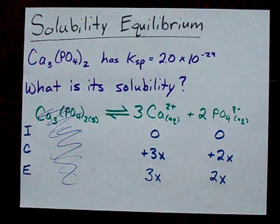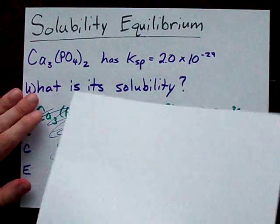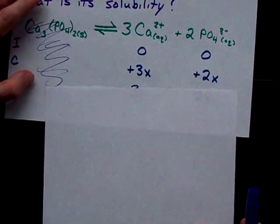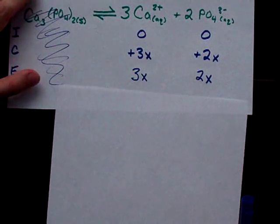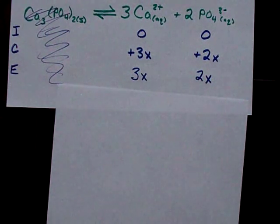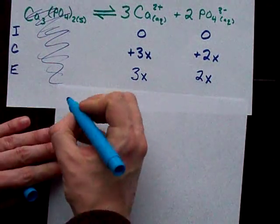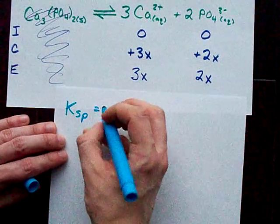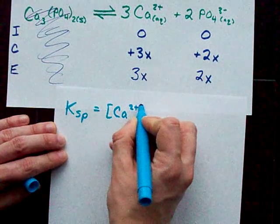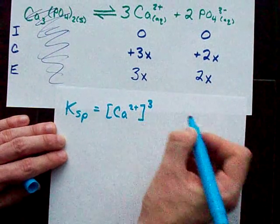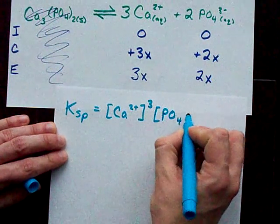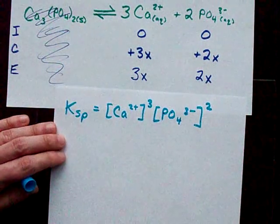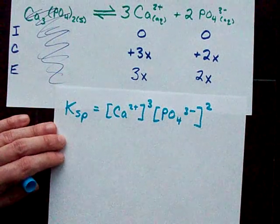Why does this matter? Because we were given K, the equilibrium constant of 2 times 10 to the minus 29, we can use these concentrations in a Ksp expression and solve for x. Ksp, as you create an equilibrium expression, is products over reactants. Calcium to the power of its coefficient. Phosphate to the power of its coefficient. And we don't include the solid in the denominator because it's a solid and we don't include solids in the equilibrium expression.